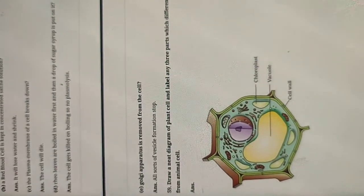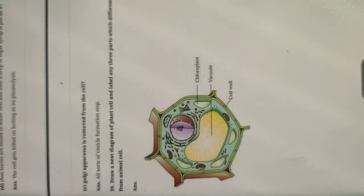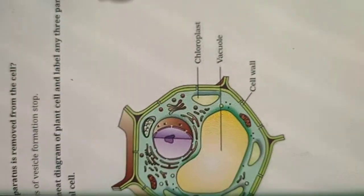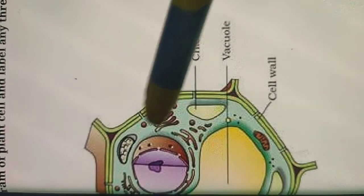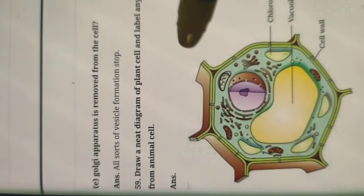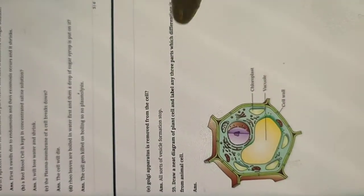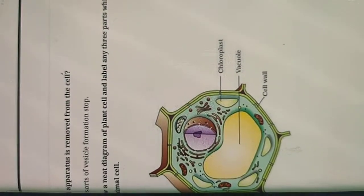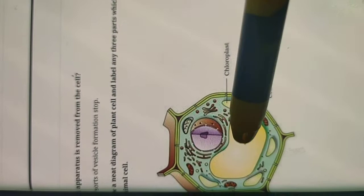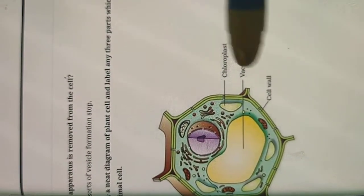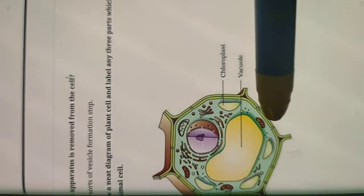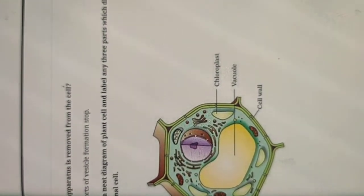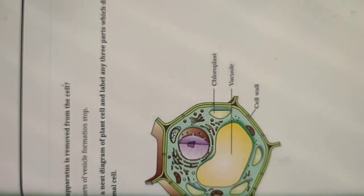The Golgi apparatus has a structure of cisternae and vesicles — if it is removed, all vesicle formation stops. The last question: draw a neat diagram of a plant cell and label any three parts which differentiate it from animal cells. The three parts to label are: chloroplast (absent in animal cells), large central vacuole (small in animal cells), and cell wall (absent in animal cells). This completes all the NCERT example long answer questions.